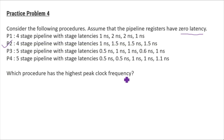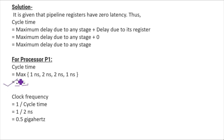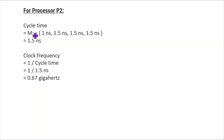To find peak clock frequency, first calculate cycle time; then clock frequency equals 1 divided by cycle time. Since register delay is zero, cycle time equals the maximum stage delay. For processor P1, cycle time = max(1, 2, 2, 1) = 2 nanoseconds. Clock frequency = 1 / 2 ns = 0.5 GHz.